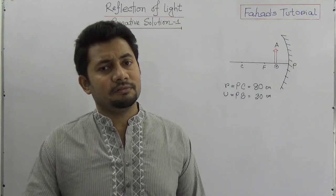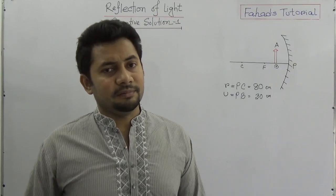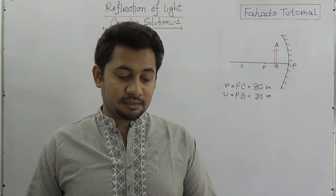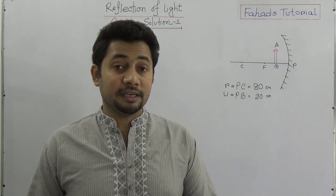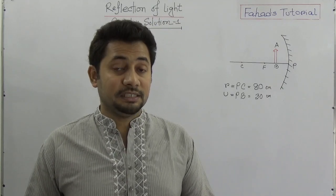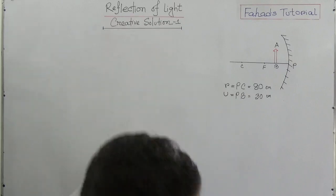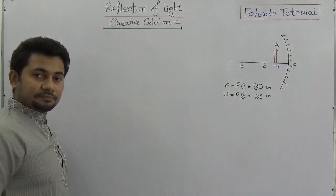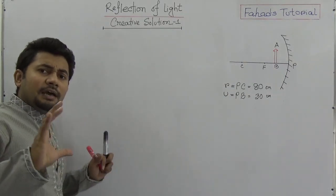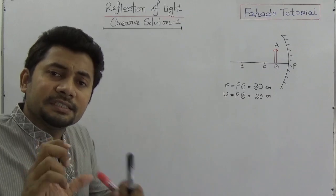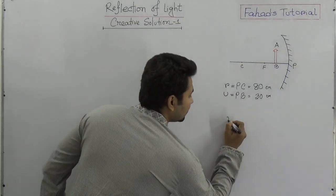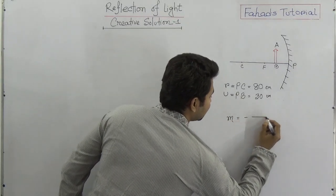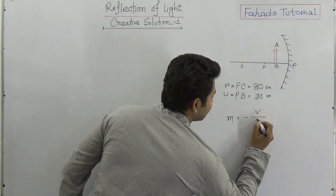Question C asks to determine the magnification of object AB. The equation for magnification is M equals minus V over U, where V is the image distance and U is the object distance.